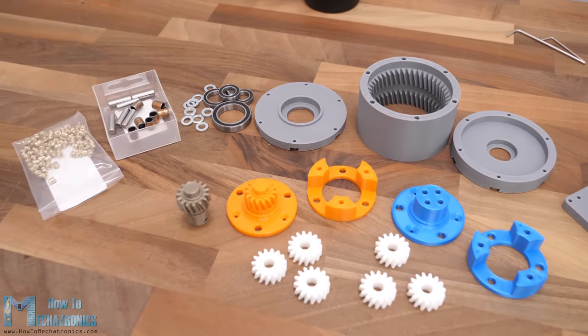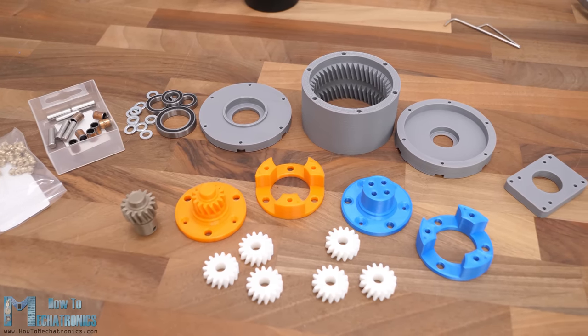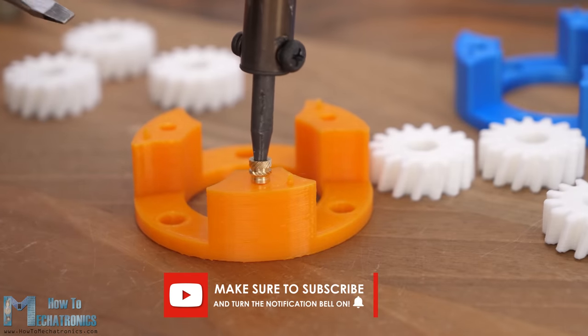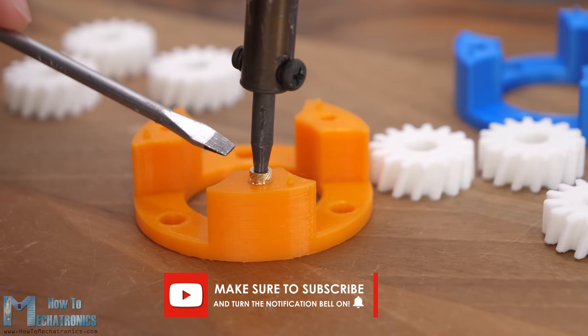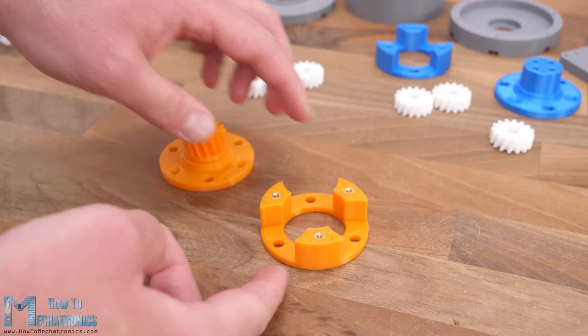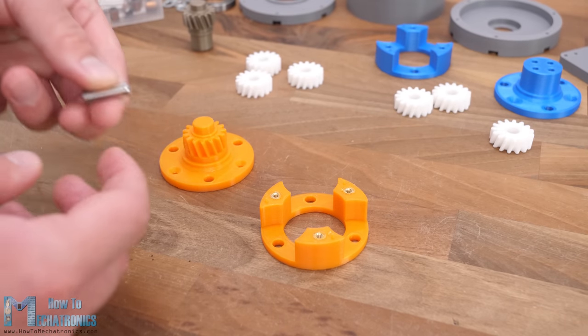Ok, so here are all 3D printed parts ready and now I can show you how I assembled the gearbox. The planet carriers are composed of two sections that need to be connected together with some M3 bolts. So first we need to insert some M3 threaded inserts into the prints.